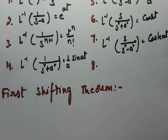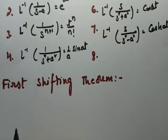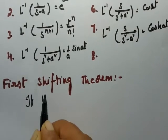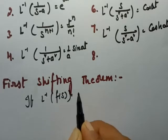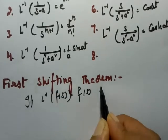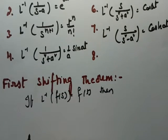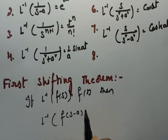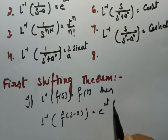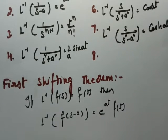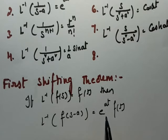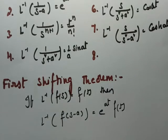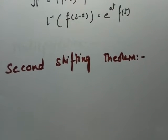The next one is the first shifting theorem. The first shifting theorem states: if inverse Laplace transform of F(s) is equal to f(t), then inverse Laplace transform of F(s minus a) is equal to e^(at) times f(t). This is most important — whenever you find (s minus a) you have to write it in the form e^(at) times f(t) using the first shifting theorem.